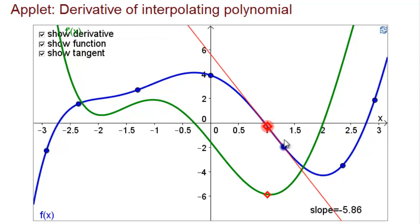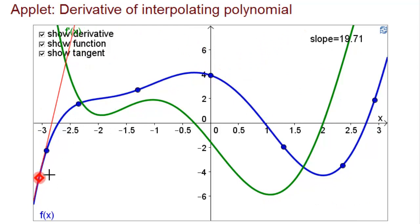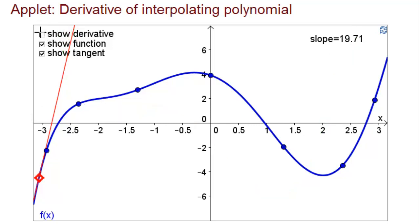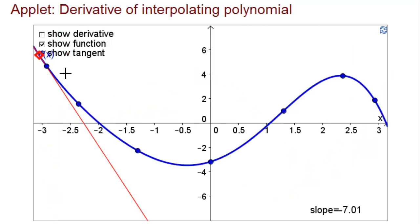Here's where the graph has the steepest negative slope, and indeed the derivative is large and negative there. Over here the slope is so large — in fact it's almost 20 — that the graph of the derivative is cut off. Again, you can test yourself by hiding the derivative and changing the function, then see if you can figure out what the derivative will look like.